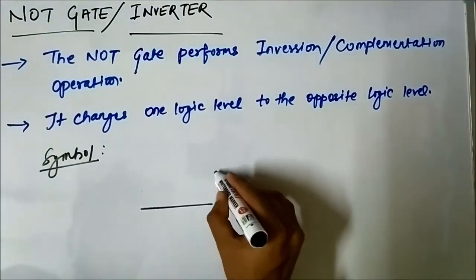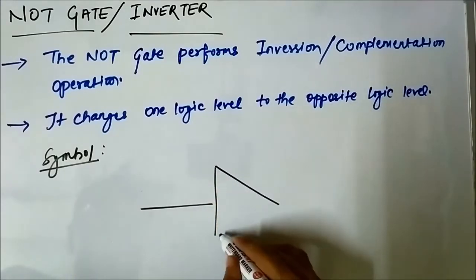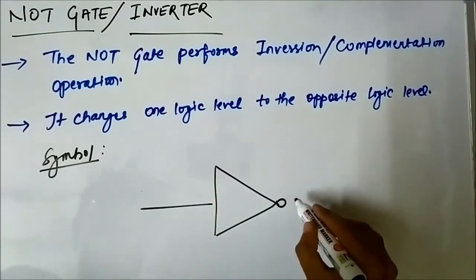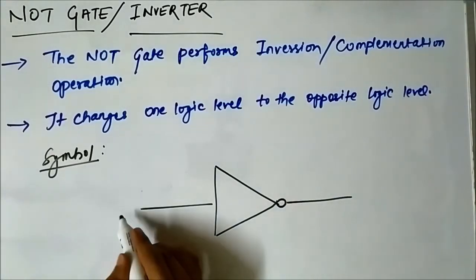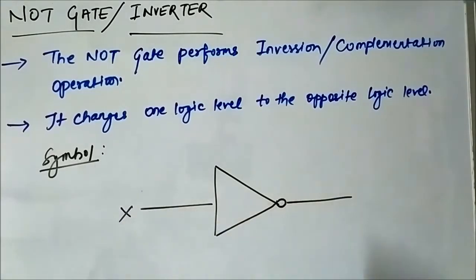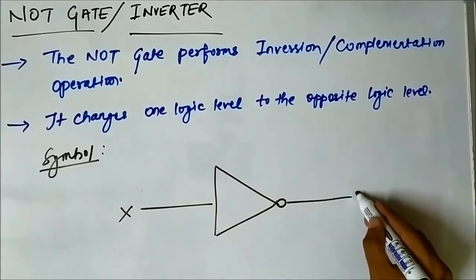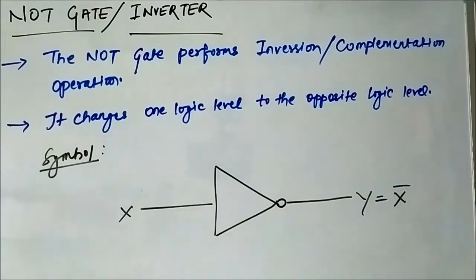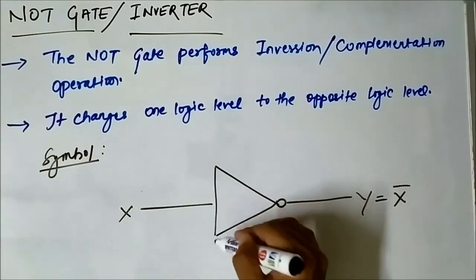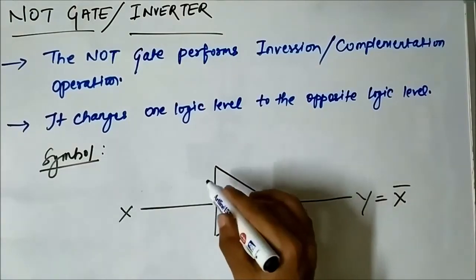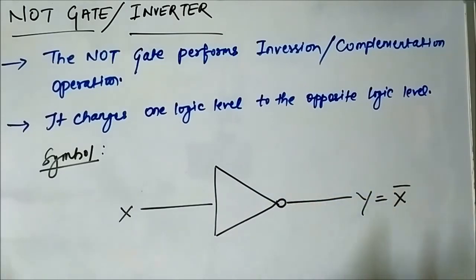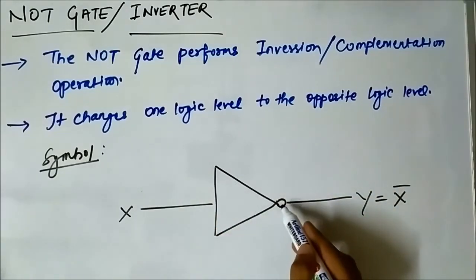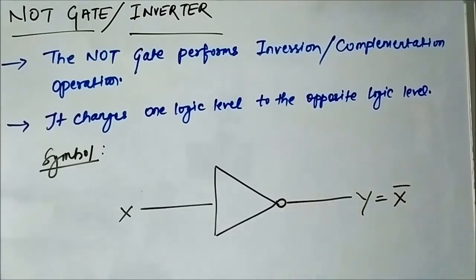The schematic symbol of the NOT gate looks like this. The input is x and the output is y, where y equals x complement. It is a triangle with a bubble at the tip — you can remember it as a triangle with a bubble at the upper tip. This is the symbol of the NOT gate.